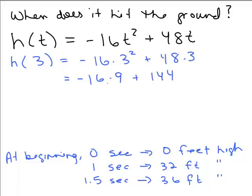That's -16 times 9 plus 144, 16 times 9 is 144. So, we have -144 + 144 is 0. So, it makes sense that 3 seconds it would hit the ground again. We're down here at 0 feet.